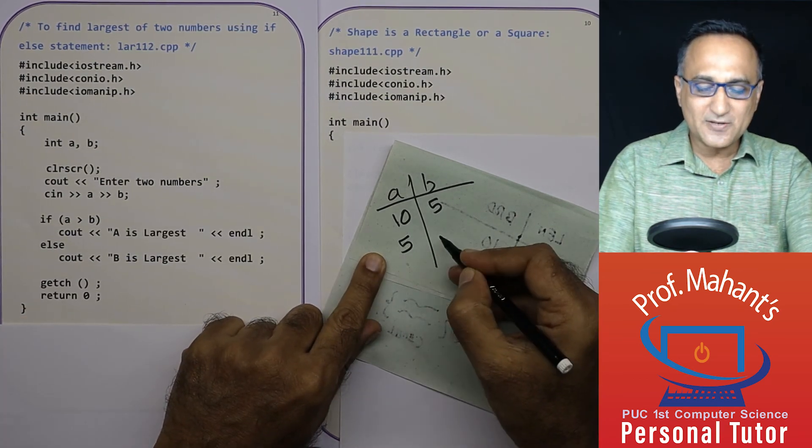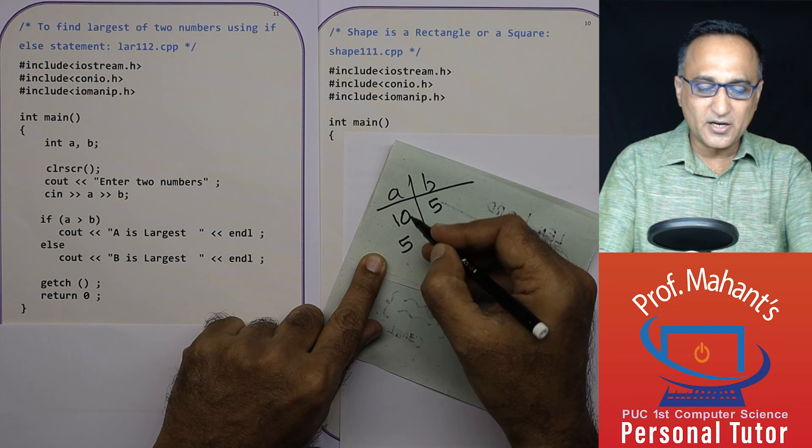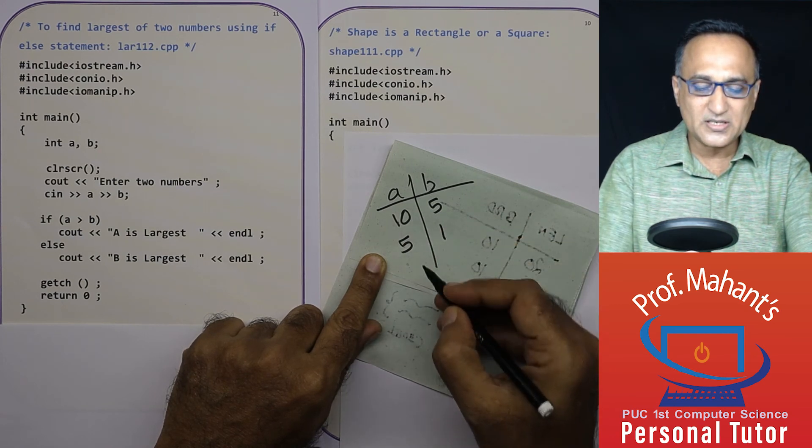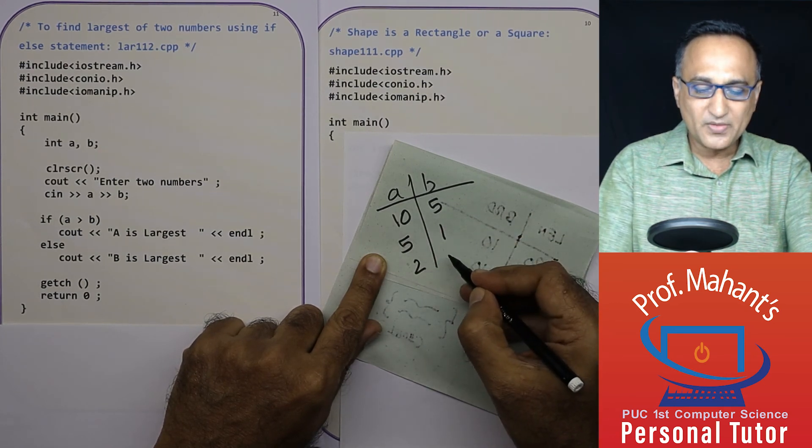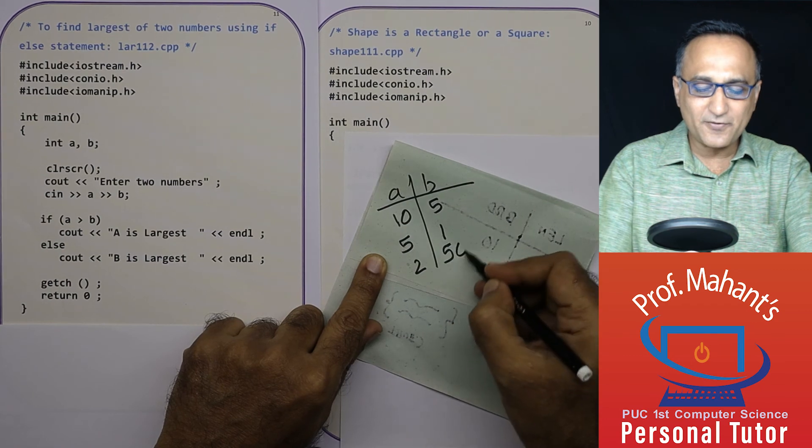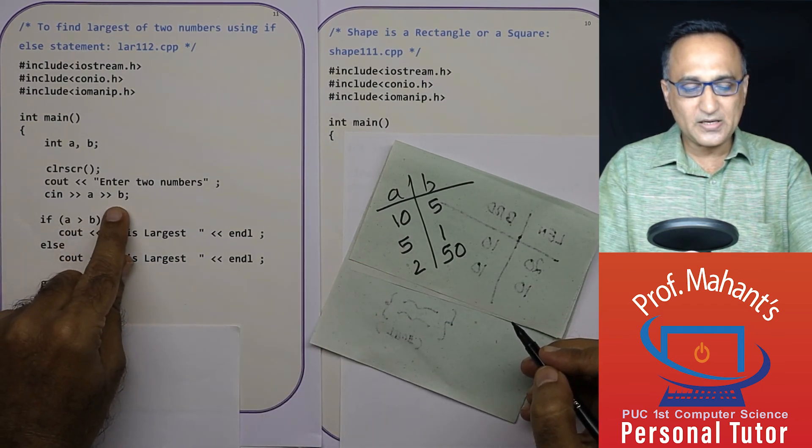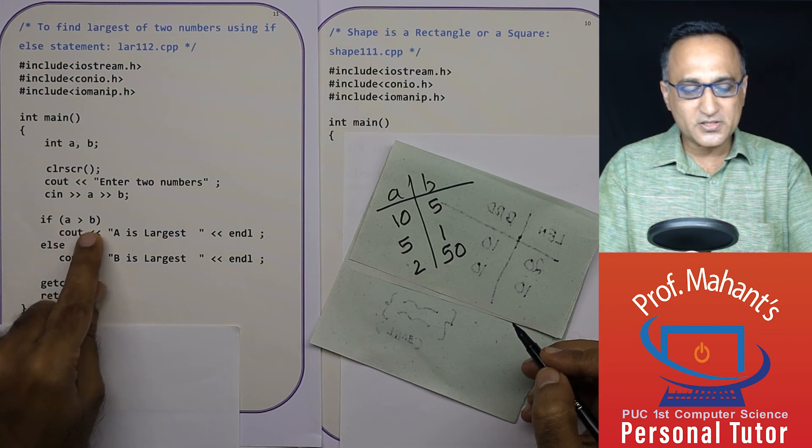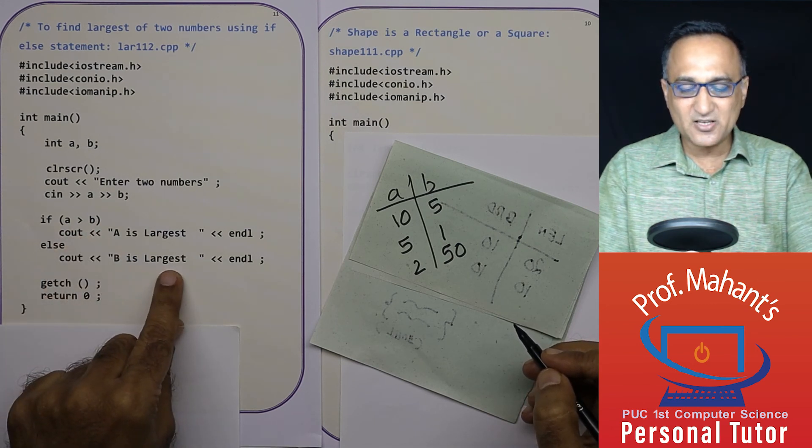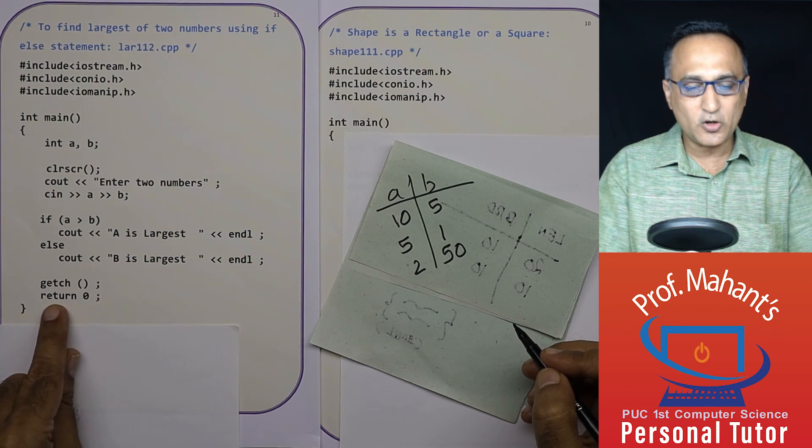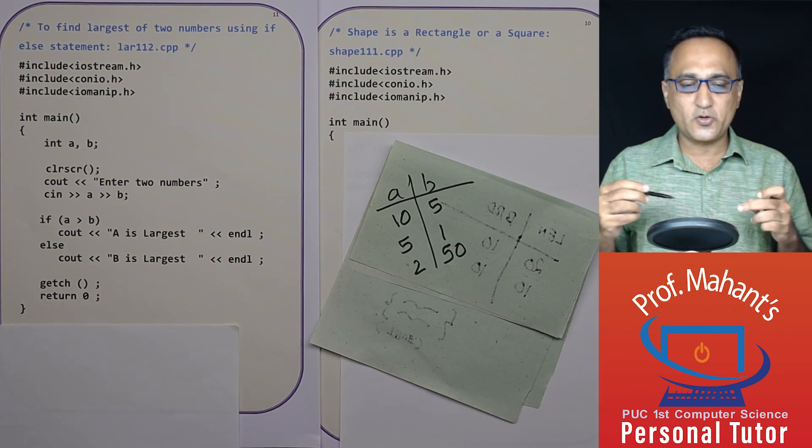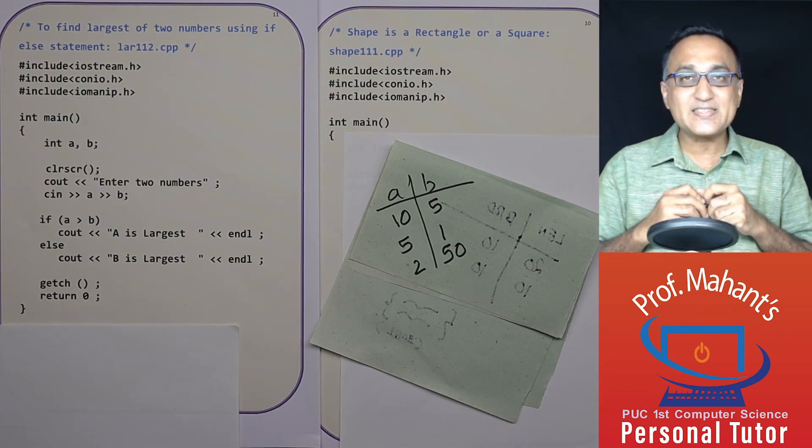Suppose I give the values as 5 and 1. Still it will print a is largest, b is smallest. Suppose I give 2 and this I give as 50. Then what is going to happen? A is 2, b is 50. 2 is greater than 50? False. So it will say b is largest. So I hope you understood the working of the if-else statement.